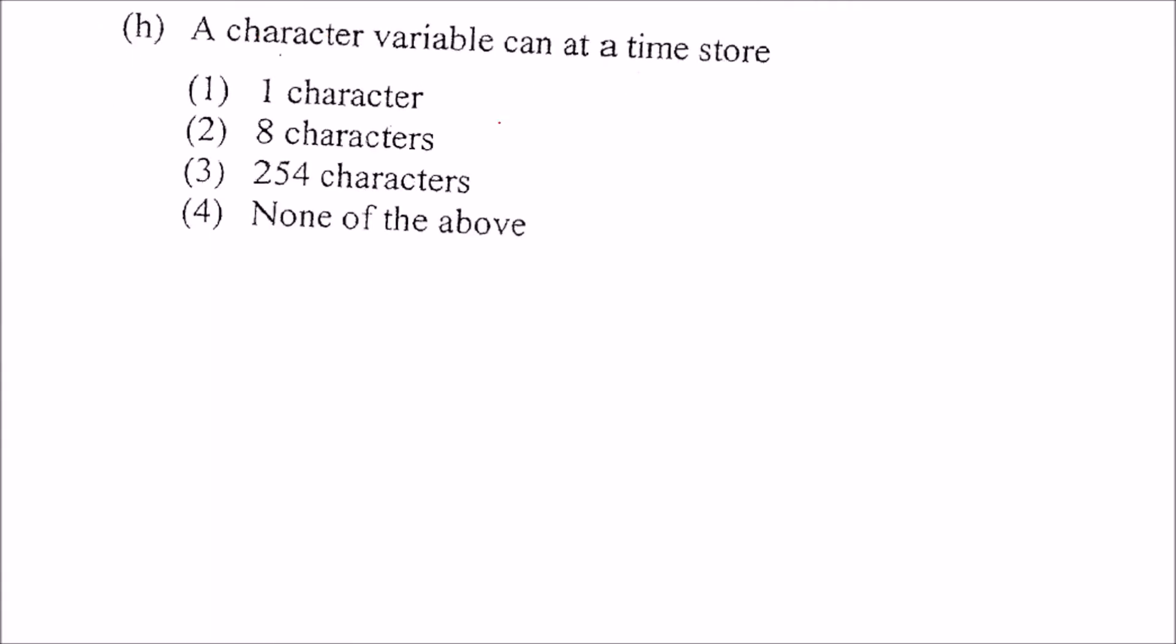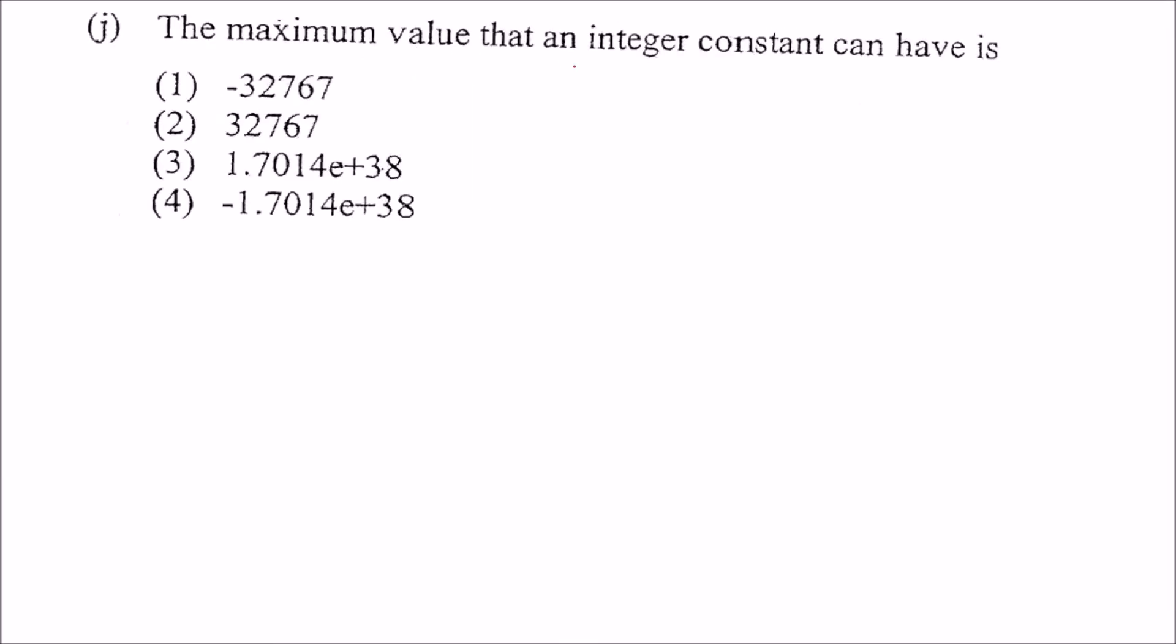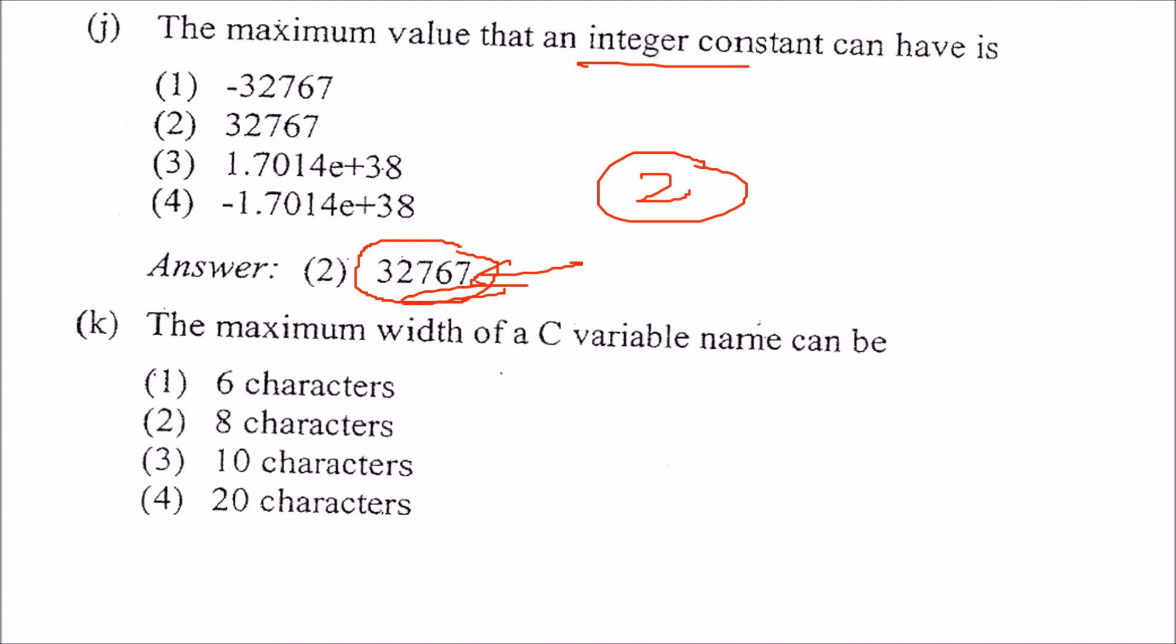A character variable can at a time store how many? A character is one character only. Only one character. So, the answer will be one character. Character means one character. Which of the following is not a character constant? None of these. None of these. Means all of the above they are not character constant. Character constant means just in the single quotes you just have to have one character. The maximum value that an integer constant can have. See, this is very system dependent or compiler dependent. So, you can have if we just go to, we give just 2 bytes to our integer constant. Then the maximum value can go up to 32767. So, we will stick up to this. You know, for our discussion, for our solving of these question answers. We will assume it to be 2 bytes. Then it goes to 32767. Actually, it goes to 32767 on the right hand side of the number line and minus 32767 on the left hand side.